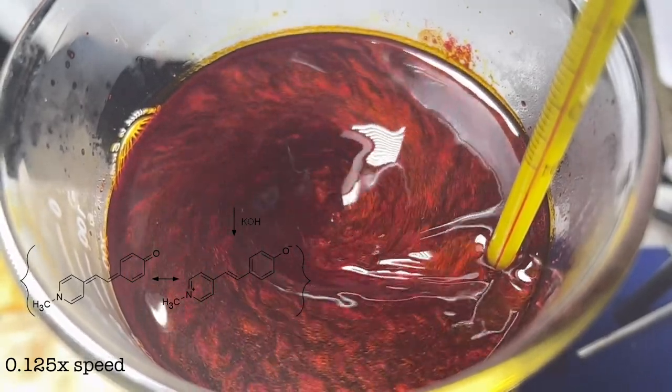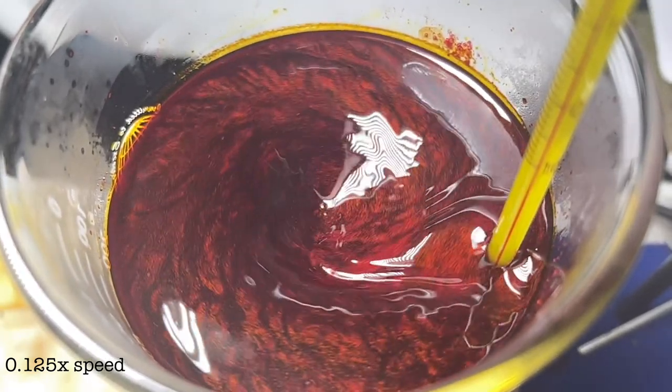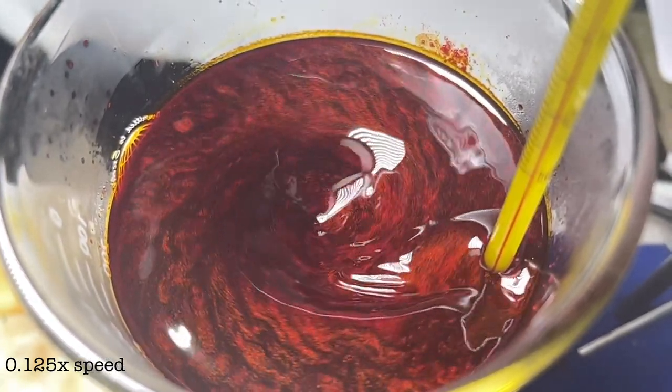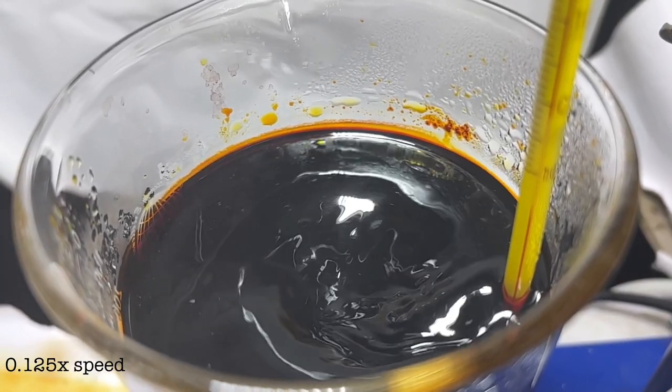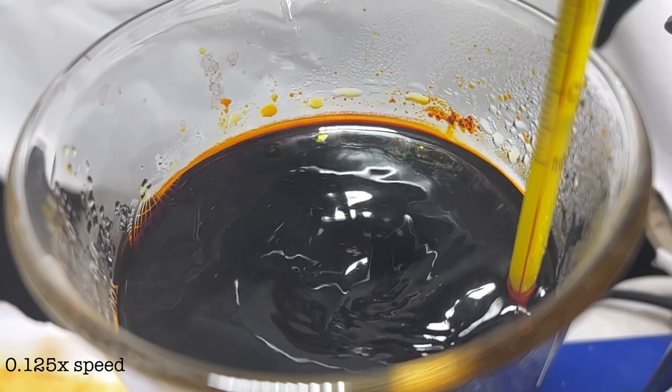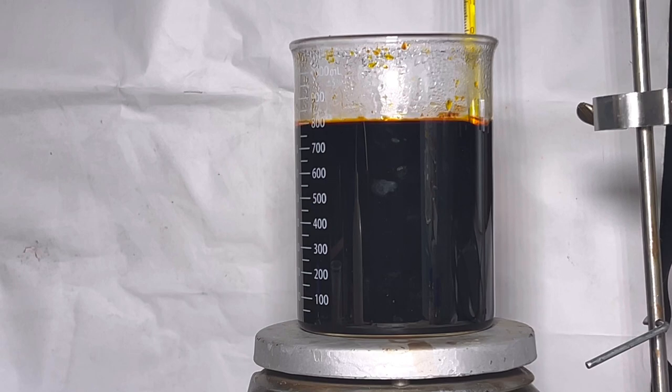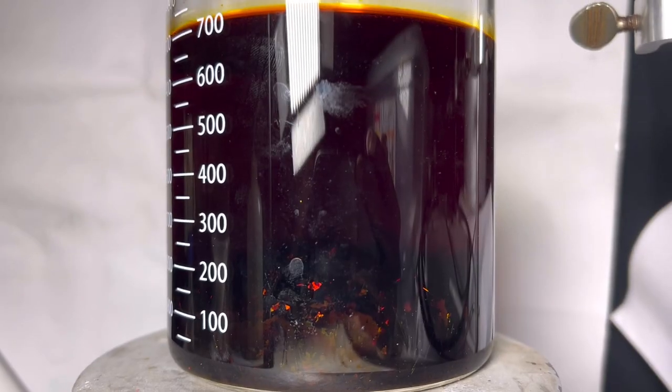While dissolving it created a very nice pattern so I shot a small clip of the video in slow motion. The solution was heated gently but it was not boiled. Once everything is dissolved we get a deep red to almost black colored clear solution. After that the heating was stopped and the beaker was allowed to come down to room temperature.